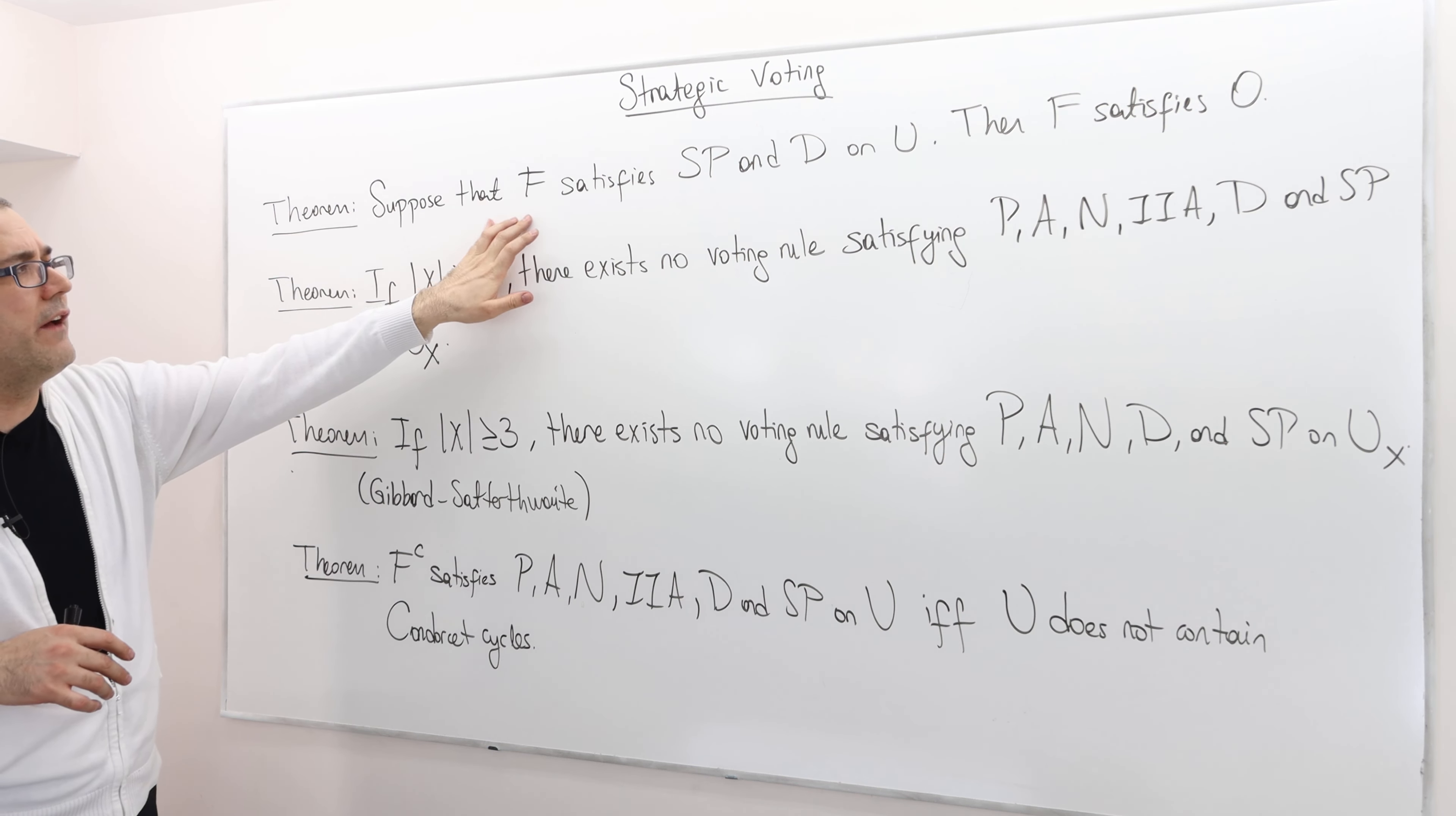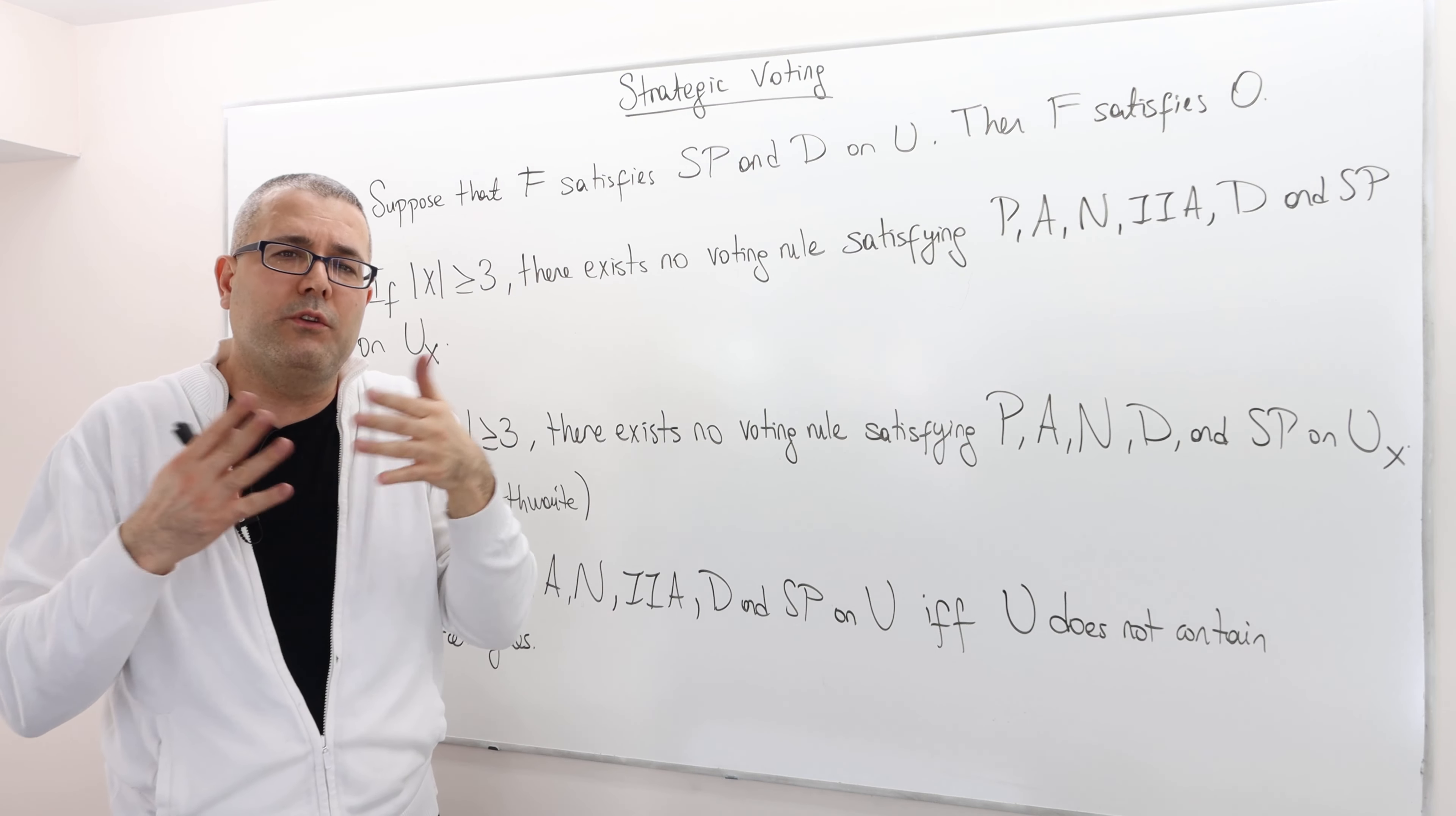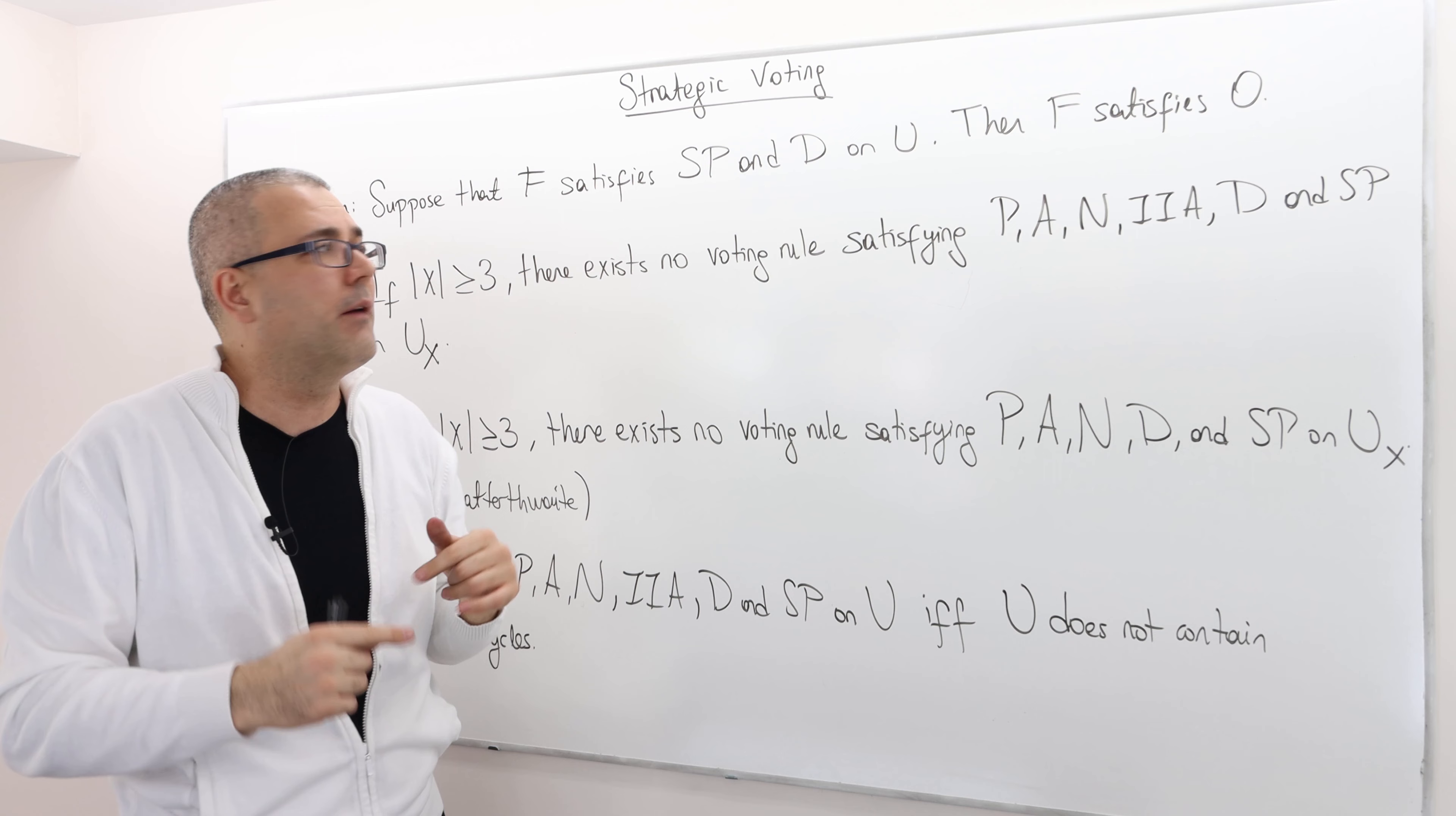Suppose that the voting rule F satisfies strategy proofness and decisiveness. I mean no player has incentive to deviate so everybody is going to vote truthfully and the voting rule is decisive meaning it will always give us one and only one outcome.